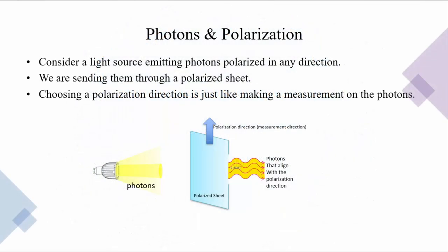Let us start with a light source emitting photons polarized in different directions, as shown in this picture. These photons are sent through a polarized sheet. The polarization direction of the polarized sheet is just like making a measurement on the photons with a specific direction. In this example, a vertical polarization direction is chosen, and photons that align with the polarization direction pass the sheet while the rest are deflected.